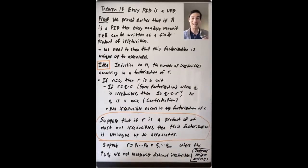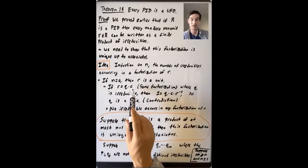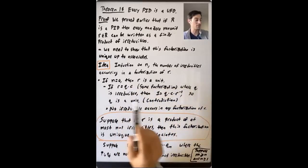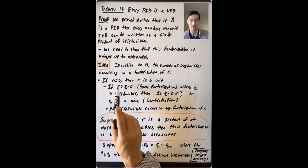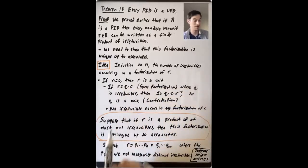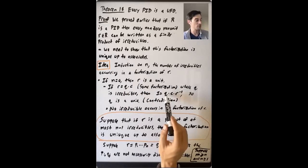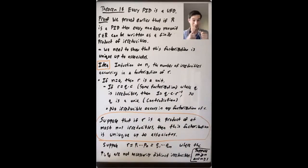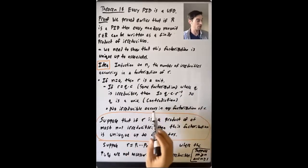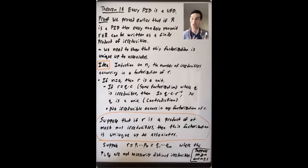Suppose we had a factorization of r that contained at least one irreducible, so r equals q times c where q is irreducible. Since r is a unit, multiply both sides by r inverse: one equals q times c times r inverse, so q is also a unit — a contradiction, since q was irreducible. So if n equals zero, if r is a unit, then no irreducible occurs in any factorization of r.